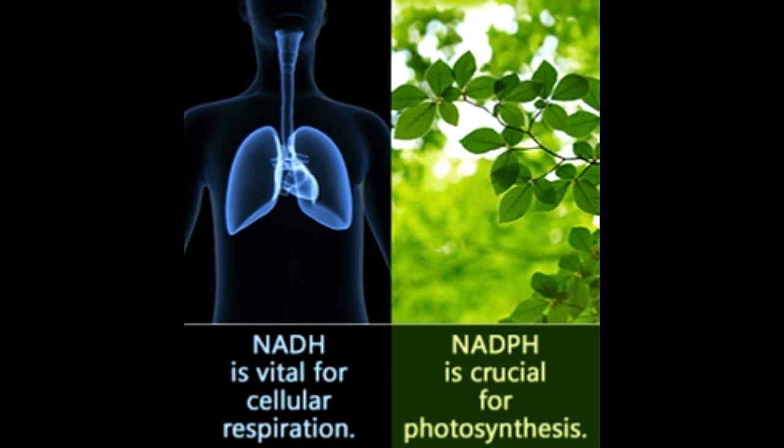NAD is used in cellular respiration, a process in which body cells obtain energy from nutrients. Plants primarily use NADF during photosynthesis to make glucose and oxygen. NADF is produced from NADP+ during the light-dependent reactions of photosynthesis. In the light-independent stage of photosynthesis, the NADF formed helps to convert the absorbed carbon dioxide into carbohydrates. So, NADF is crucial in carbohydrate synthesis occurring in plants.